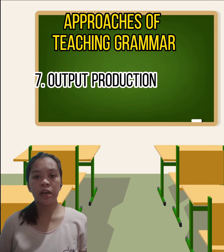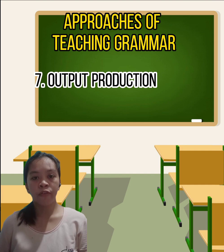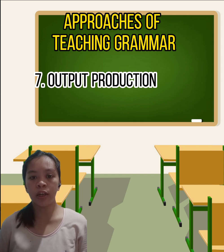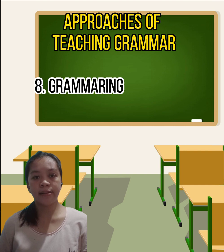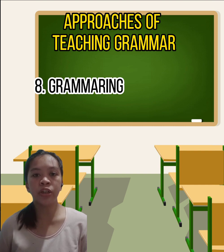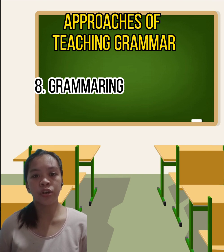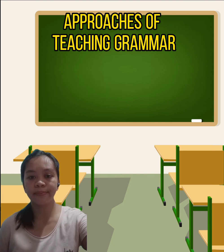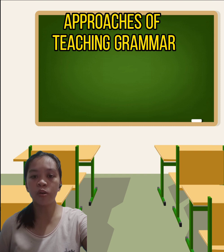Number seven is output production — the production of outputs concerning the target language. And lastly, the grammar ring. It is the process by which a learner acquires the ability to use grammar structure accurately. And those are the approaches in teaching grammar.